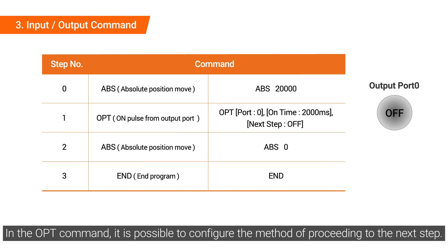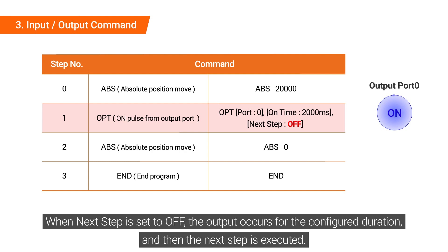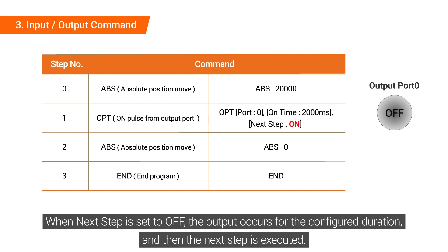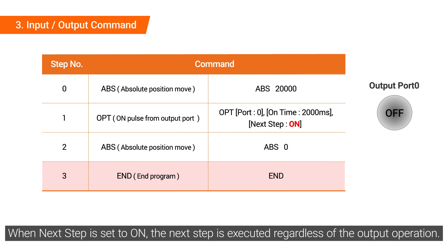In the OPD command, it is possible to configure the method of proceeding to the next step. When next step is set to off, the output occurs for the configured duration and then the next step is executed. When next step is set to on, the next step is executed regardless of the output operation.